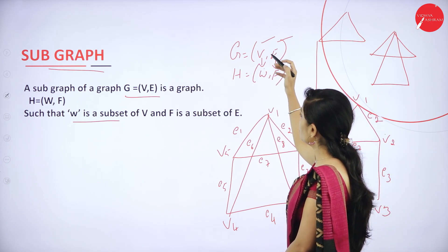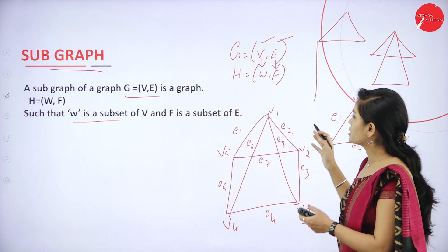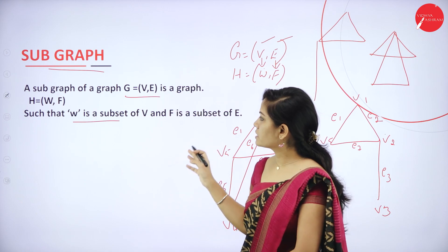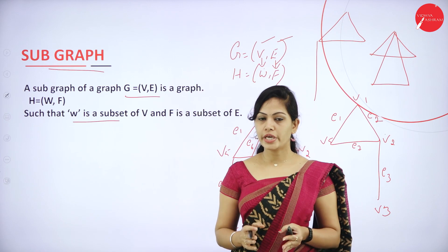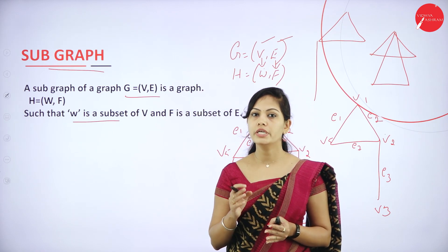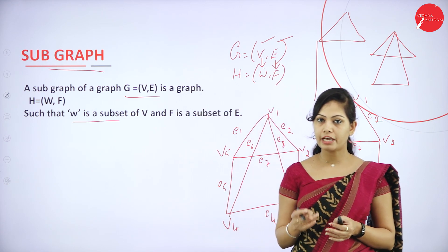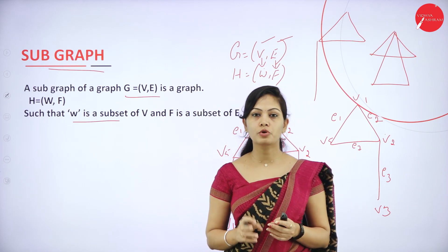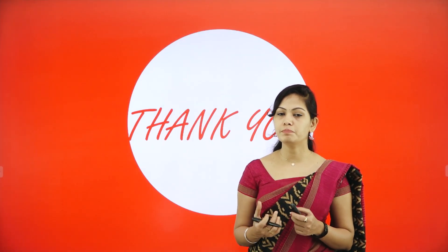So if G=(V,E), then the subgraph is H=(W,F). This is a very important concept. Today you learned: subgraph, directed graph, null graph, complete graph, even and odd vertices, and the important concept of degree of vertex. In my next session, I will discuss more important concepts in graph theory. Thank you.